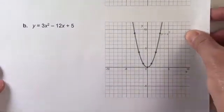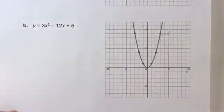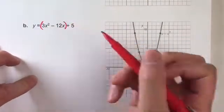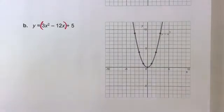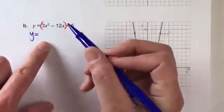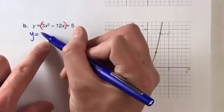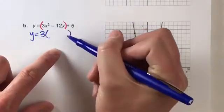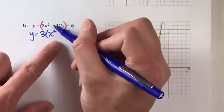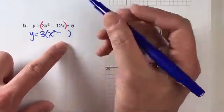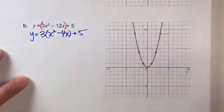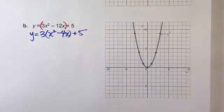Here we go. So y equals 3x squared minus 12x plus 5. Step 1: Parentheses around my first two terms, my x squared and my x term. Step 2: Let's factor out the number next to x squared. We really want just x squared by itself inside the parentheses. So I'm going to factor out that 3. 3 times what gets me 3x squared? 3 times x squared gets me 3x squared. Minus 3 times what gets me 12x? 3 times 4x gets me 12x. And then I'll drop down my 5.